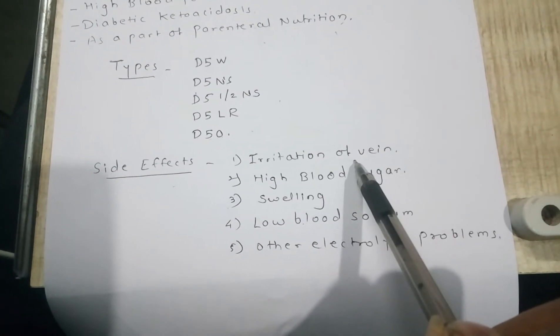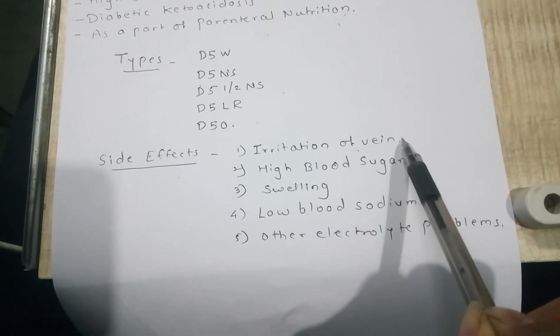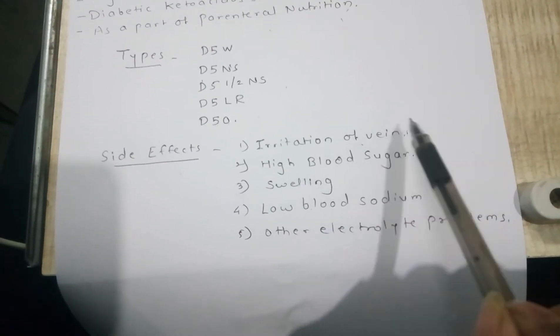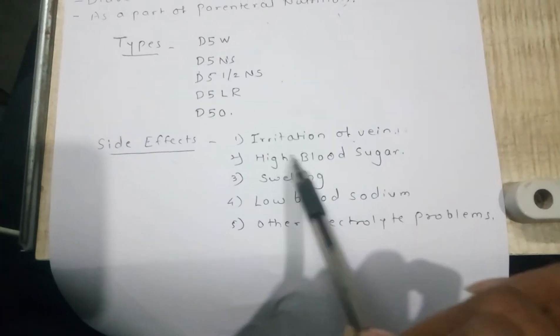What are the side effects of dextrose solution? Irritation of vein can be observed in patients normally. After that, high blood sugar.